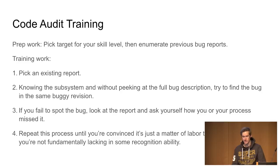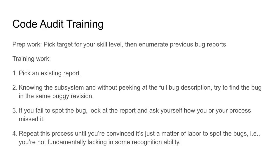Once you have a target in mind that's a little bit out of your skill range but you think is doable, you try to enumerate all the existing bug reports and look through each of them — like the Ben Franklin idea. You take the bug, look at the description mentioning the file where it's happening, and kind of skim it and sense where the bug is without actually looking at what it is. Then you go over and try to find it yourself. It's really important that you actively try to look for the bug yourself and strain yourself, and only when you've given up do you look at what the bug was.